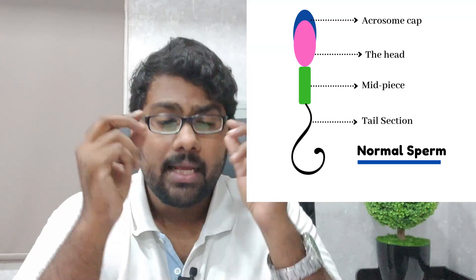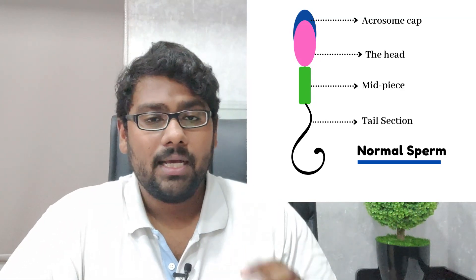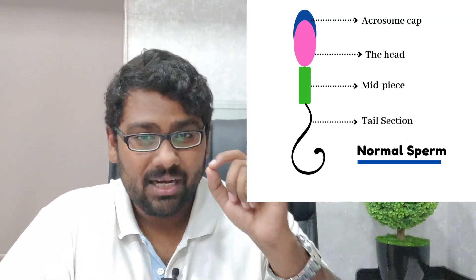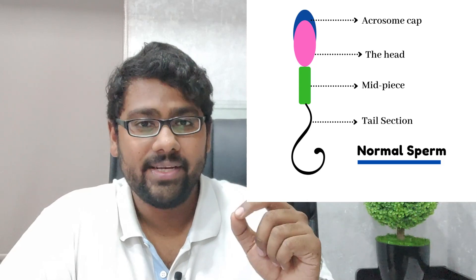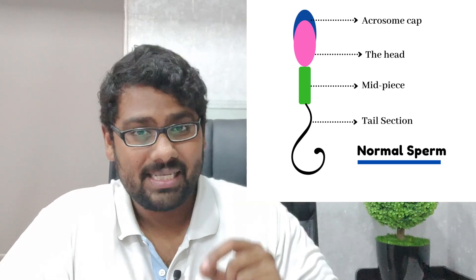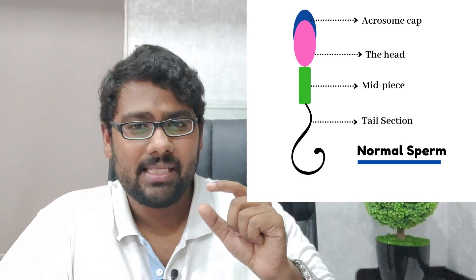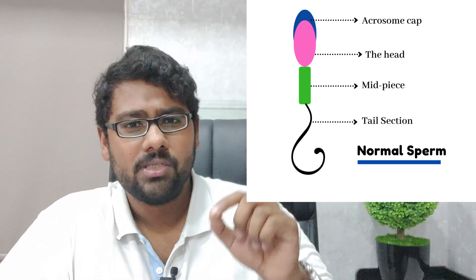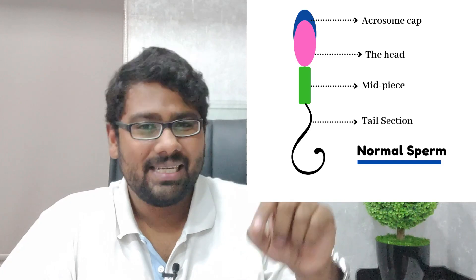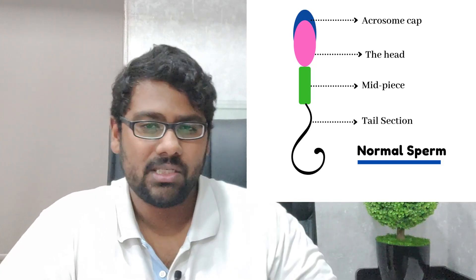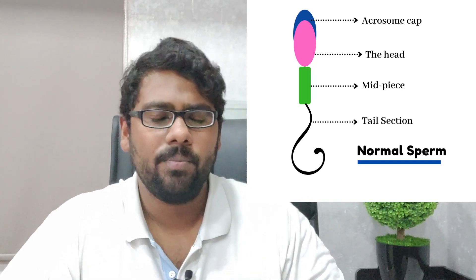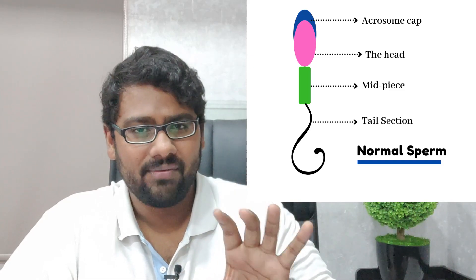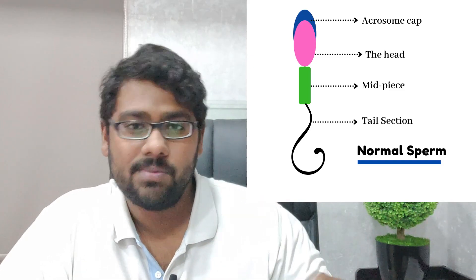Normal sperm morphology for a man trying for a child in the first year of marriage should range anywhere from about 3% to 4%. If you look at the image on the right, a normal appearing sperm has an acrosomal cap, followed by a head region, a midpiece, and a tail section. The head and midpiece should be more or less equivalent in size, the acrosomal cap should cover about 40% of the head, and the tail should be about 10 times the size of the head.